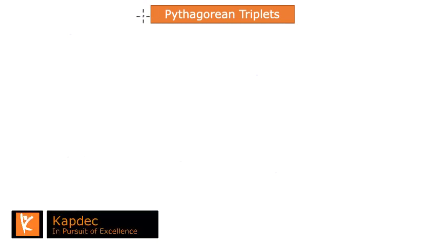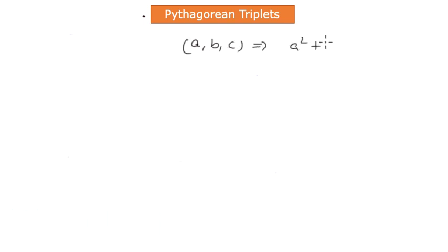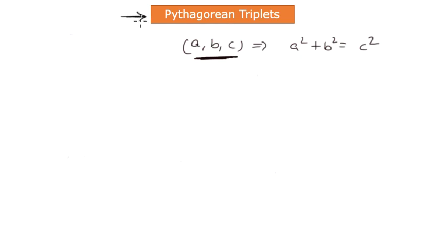Pythagorean triplets — it is about finding those three numbers, the three whole numbers A, B, and C such that A squared plus B squared is equal to C squared. These three numbers, the set of three numbers, follow the Pythagorean principle, and hence a set of three numbers that follow Pythagorean law is called Pythagorean triplets.